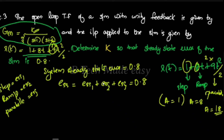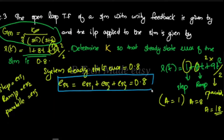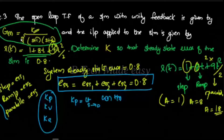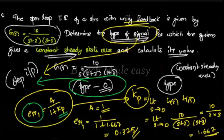What is ESS1, ESS2, and ESS3? We need to find Kp, Kv, and Ka values. For a type 2 system, ESS1 equals 0 and ESS2 equals 0, and ESS3 equals A divided by Ka.